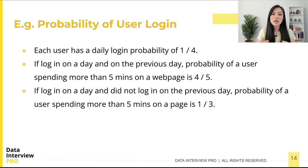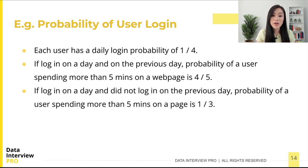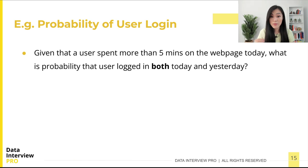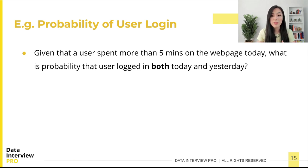Now let's apply Bayes' theorem to an example. Suppose each user on a website has a daily login probability of 1/4. If a user logs in on a particular day and also logged in the previous day, the probability of that user spending more than five minutes on a webpage is 4/5. However, if a user logs in on a particular day but did not log in the previous day, the probability of spending more than five minutes on the webpage is 1/3. The question is: given that a user spent more than five minutes on the webpage today, what is the probability that the user logged in both today and yesterday?